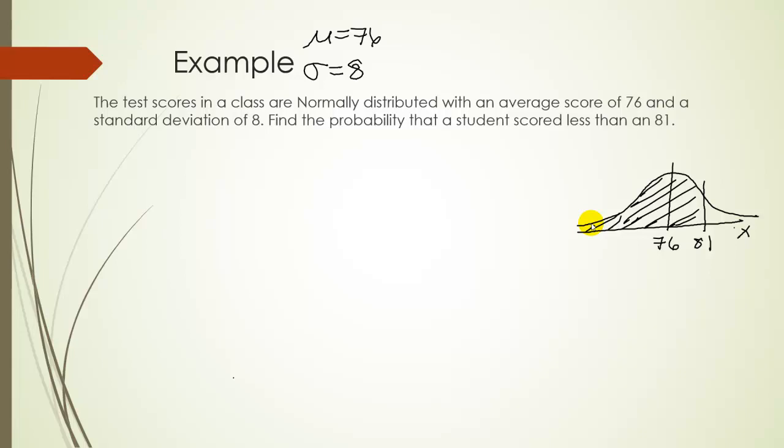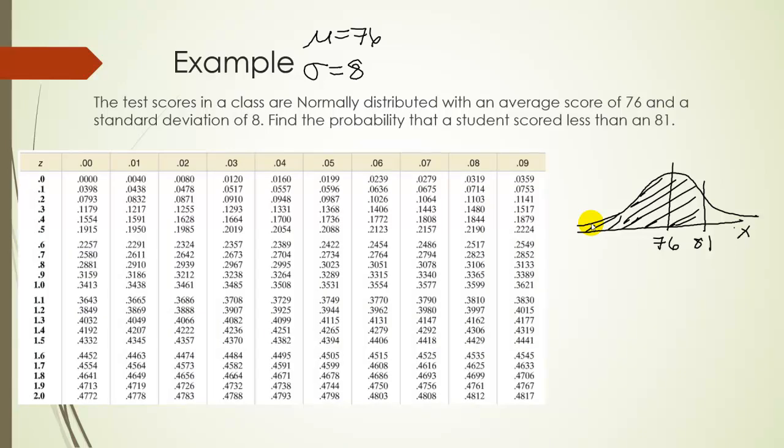Well, if we're going to use the z table for this, the z table gives us z values. So we need to find the z values associated with these x values. We already know that since z scores measure the number of standard deviations you are from the mean, the z distribution is centered around 0. So the 76 is associated with a 0. But let's find this 81 here. So if you just recall, remember our z-score formula is just x minus μ over σ.